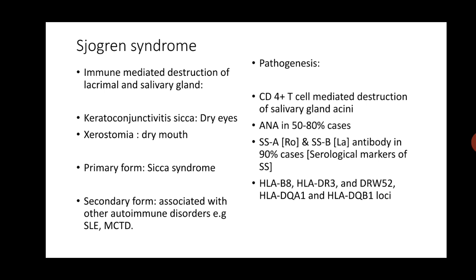Although these antibodies are not specific, they are very characteristic of Sjögren's syndrome. They can also be found in systemic lupus erythematosus. Genetic susceptibility is associated with particular HLA types such as HLA B8, DR3, DQw58, DQA1 and DQB1 loci. Patients with these HLA types have a higher risk of developing Sjögren's syndrome.